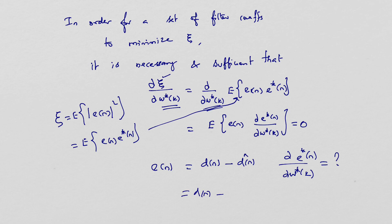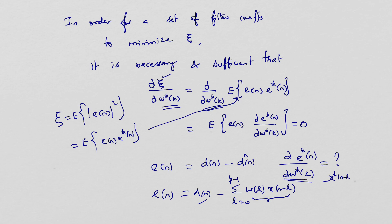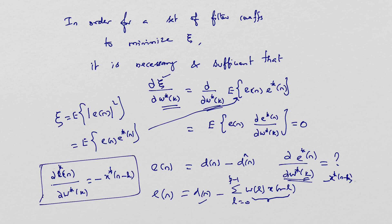d(n) is the desired output and d-hat(n), the actual output, is the sum from l equal to zero to p minus one of w(l) times x(n minus l) for a p-th order filter. When we differentiate e*(n) with respect to w*(k), the entire summation collapses to a single term: the rate of change of e*(n) with respect to w*(k) equals minus x*(n minus k).